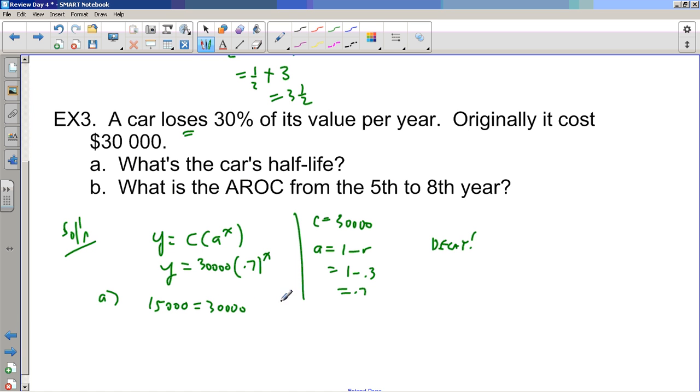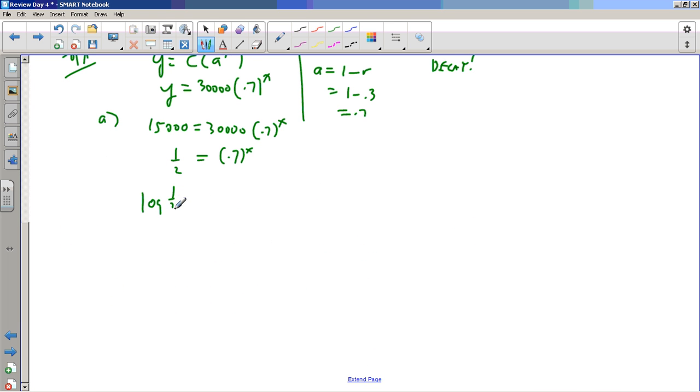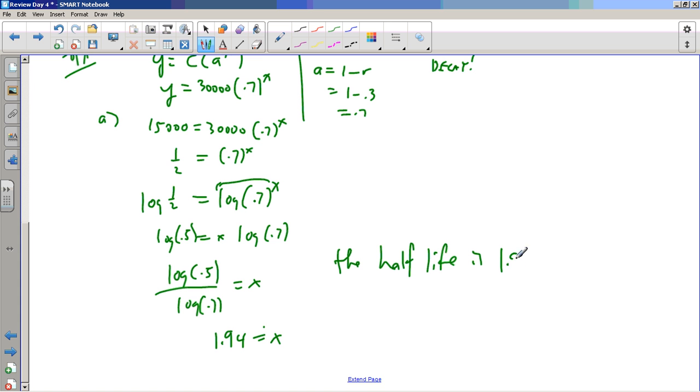But now for part a I want to find the half-life, which is how long it takes to be worth half as much. This is just an exponential equation. Divide both sides, I can't combine here, don't do that, divide both sides by thirty thousand and I get a half over here. And then I want to get the unknown out of the exponent so I'm going to take the log base ten of both sides so I can use my calculator. The x comes down in front. I'm going to change to a decimal here and then just fire this into your calculator. Here x is log of point five divided by log of point seven and I got it to be about one point nine four years. So it loses half of its value in almost two years. The half-life is 1.9 years.